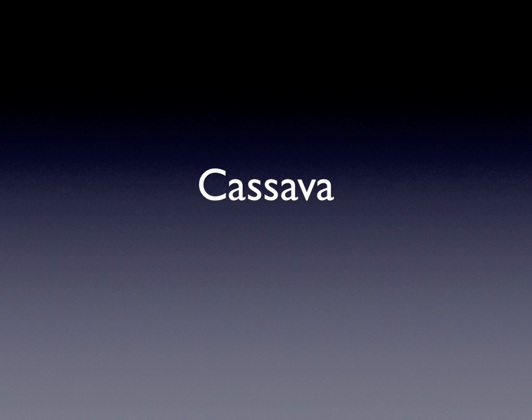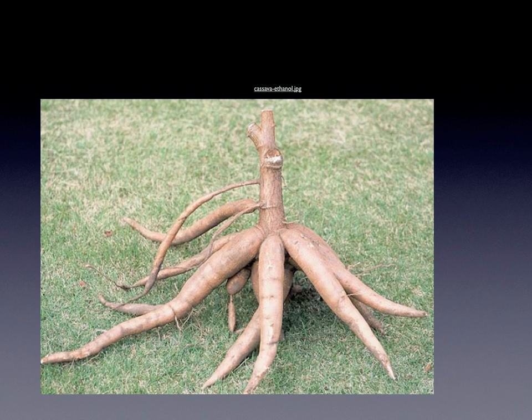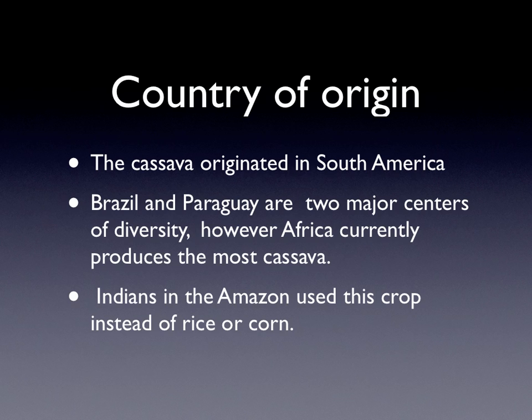Cassava. The cassava originated in South America. Brazil and Paraguay are the two major centers of diversity. However, Africa currently produces the most cassava. Indians in the Amazon use this crop instead of rice or corn.